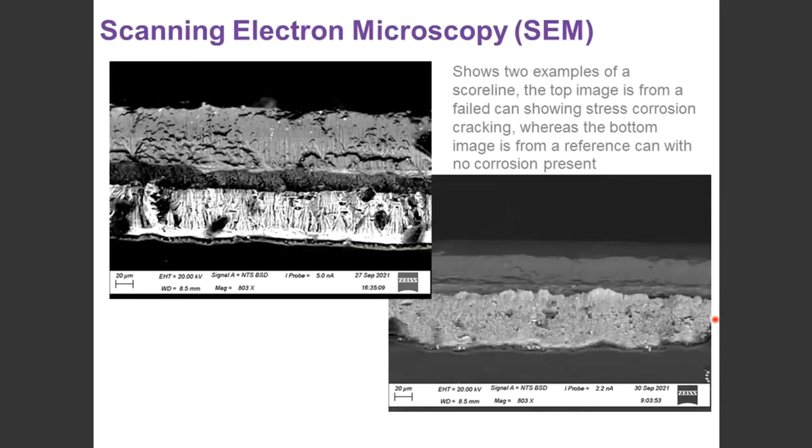Now, moisture along the scoreline could be, as a result, from the processing line. So, it may be that they haven't been dried sufficiently, or it could be from an environmental factor. Something like if you're shipping to a more humid environment, or you're in a non-controlled warehouse, for example.